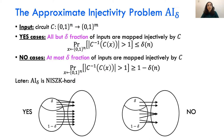If the permutation problem were NISZK-complete, we would essentially be done. But that doesn't seem to be the case. So instead, we introduce a variant of the permutation problem that is NISZK-complete: the approximate injectivity problem.